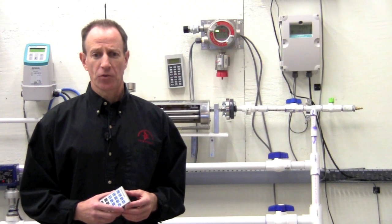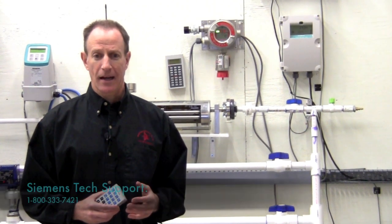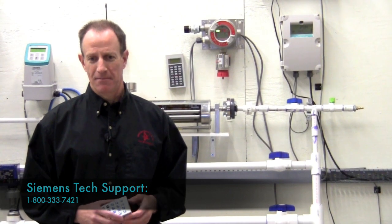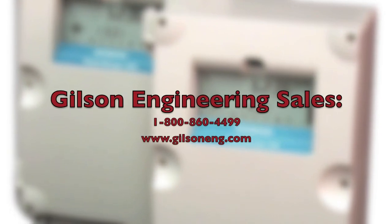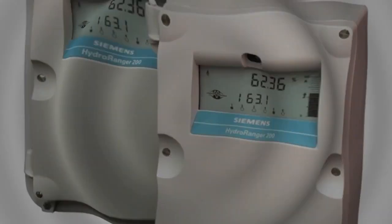If you have any questions with these troubleshooting techniques, please call us here at Gilson or Siemens Tech Support at 800-333-7421. See you next time.